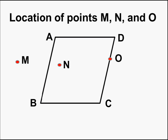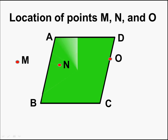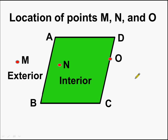Now let us figure out the locations of various points. Here we have three points: point M, point N, and point O. First, point N — this is the interior of the quadrilateral, hence we can say point N lies in the interior of the quadrilateral. Next, point M lies outside the quadrilateral, hence its location is exterior of the quadrilateral. Coming to point O — it lies on the quadrilateral, so point O lies on the quadrilateral.